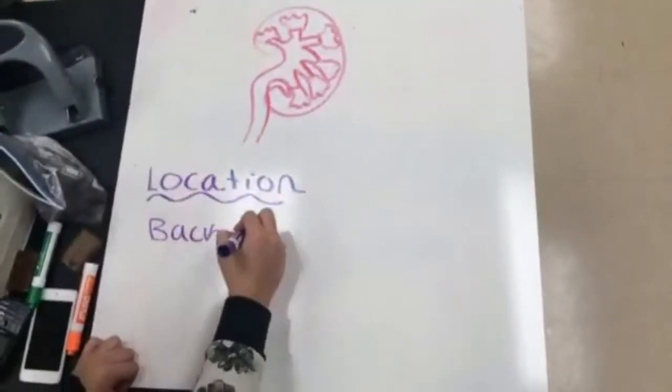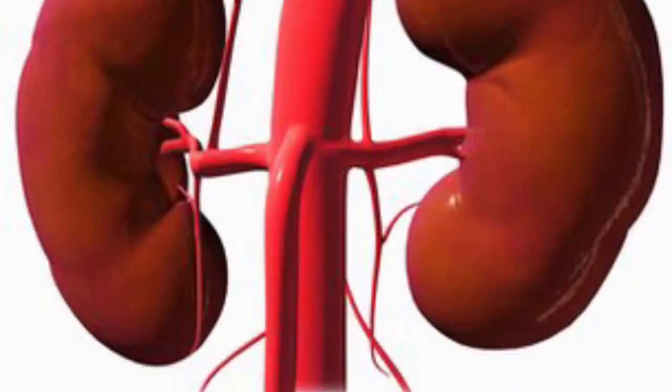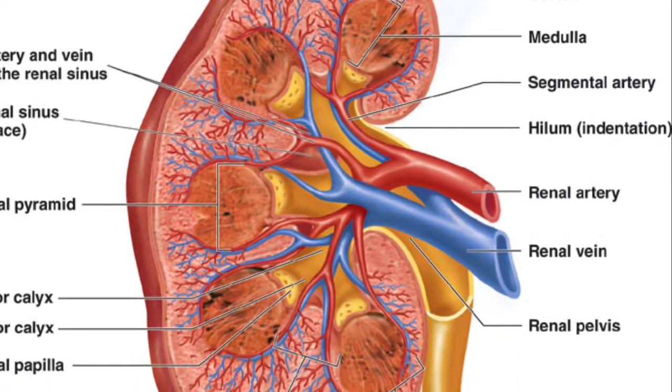The kidney is located in the back of the abdomen. Tissues in the kidney.